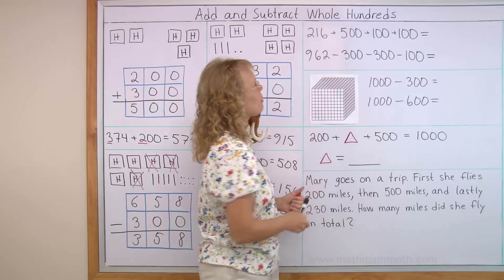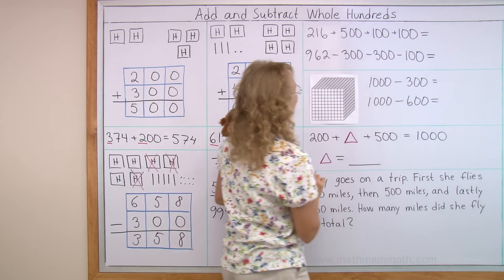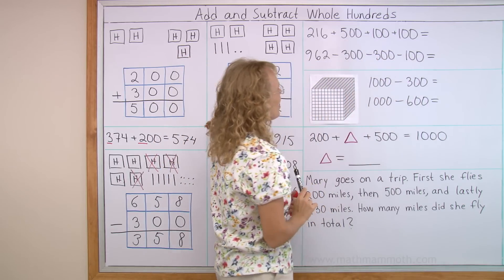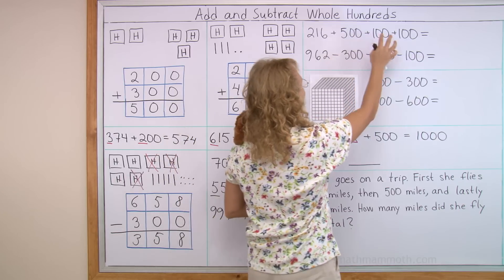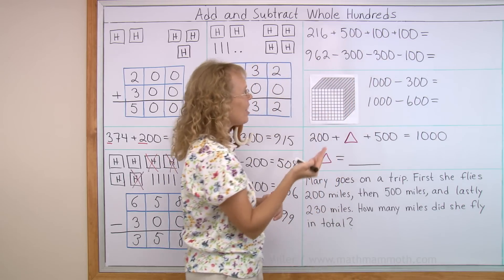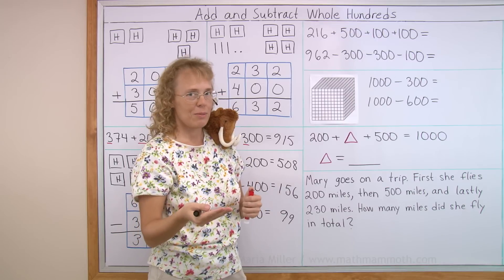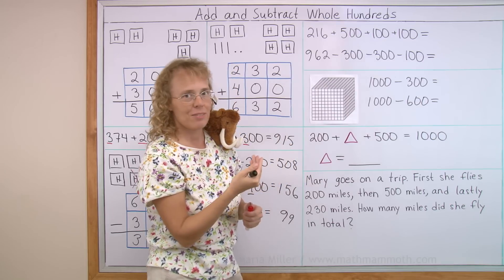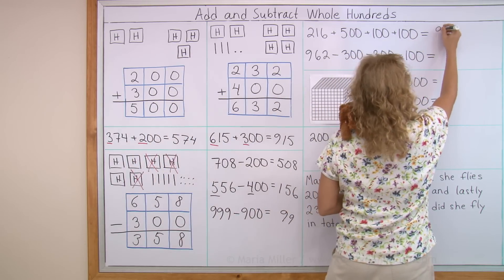A little bit more challenging, because this is so easy. Add many, many whole hundreds. Add 500, 100, and 100. A quick way to do that is I can think 500, 100, 100 makes 700. So to this number, I add 700. And we get 200 and 700 makes 900. And then the 16, they don't change.